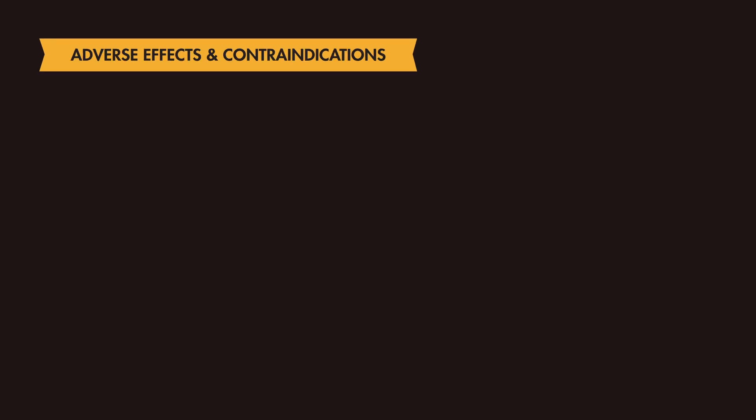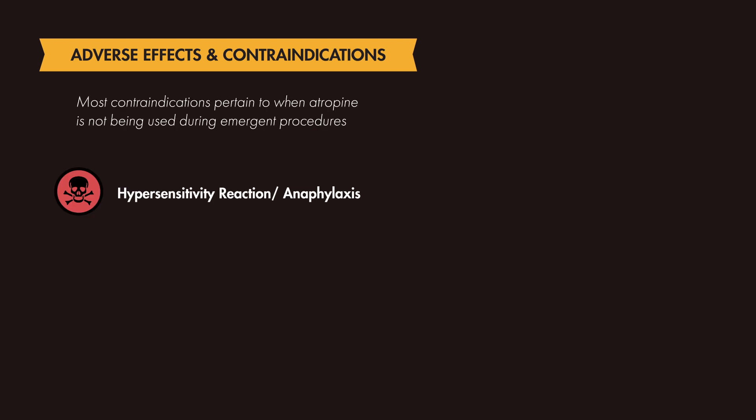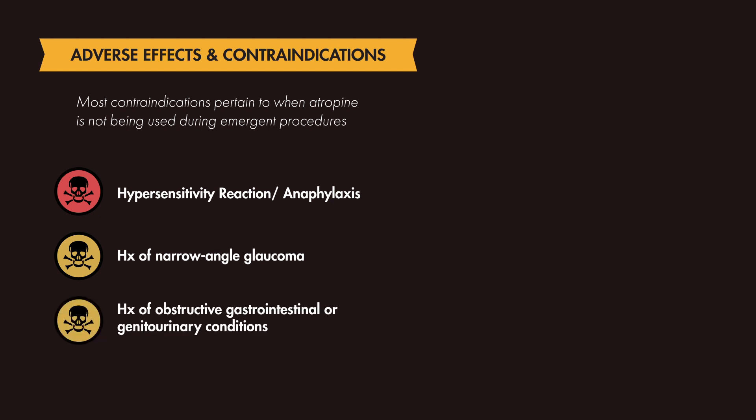There are few considerations, adverse reactions, and contraindications when using atropine during RSI. In addition to avoiding its use in patients with known hypersensitivity, most contraindications arise in non-emergent settings, such as avoidance in patients predisposed to narrow-angle glaucoma, since atropine causes pupillary dilation and may increase intraocular pressure. It is also contraindicated in patients with obstructive gastrointestinal or genitourinary conditions due to its anticholinergic effect on the parasympathetic nervous system.